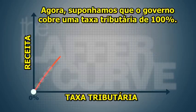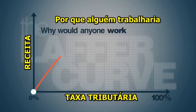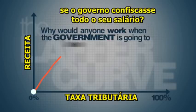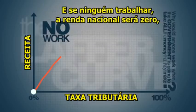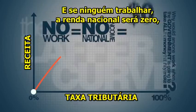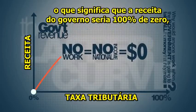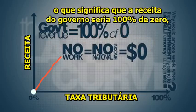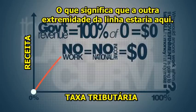Now suppose the government charges a 100% tax rate. If this happens, then no one would work — why would anyone work when the government takes all the money they make? And if no one works, national income would be zero. This means government revenue would be 100% of zero, or zero, giving us another point on the curve.